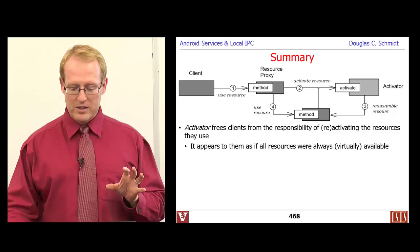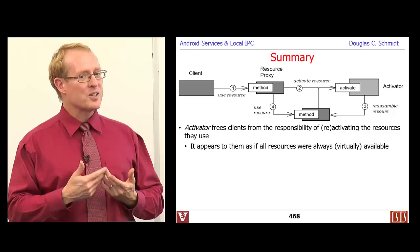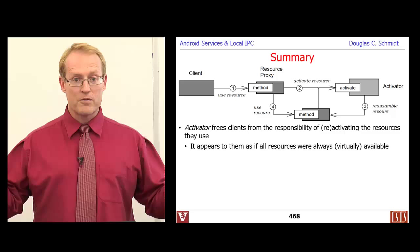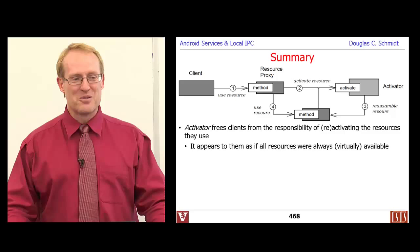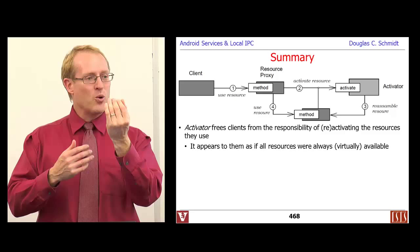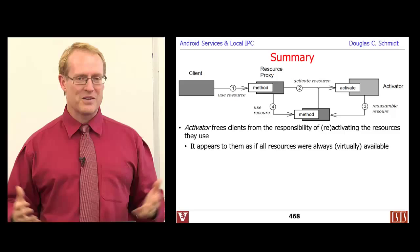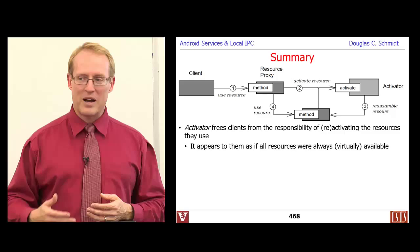To summarize, Activator basically allows you to free the clients from the responsibility of activating resources themselves — they just call bind service or make a call and everything happens under the hood, making it look as if resources were always available. This is similar to the concept of virtual memory, where the processor is given a virtual address and pretends there's a really large address space. When the processor accesses a virtual address not currently in physical memory, you incur what's known as a page fault, which goes out to secondary storage, reads in that page, stores it into main memory, fiddles with the page tables, and brings it in on demand.